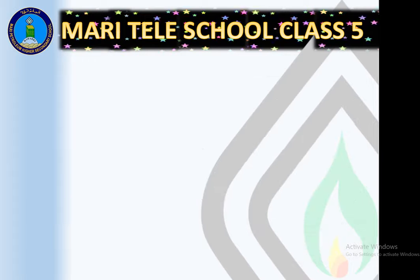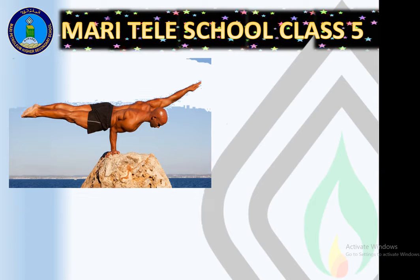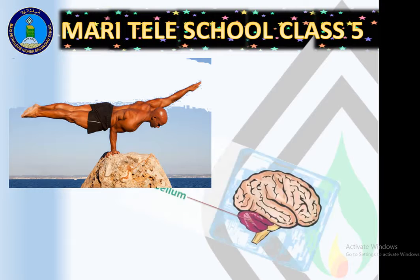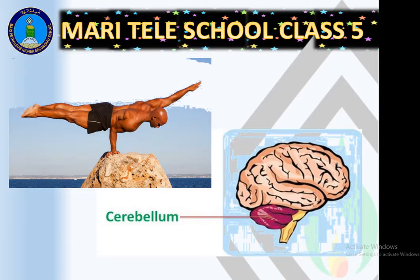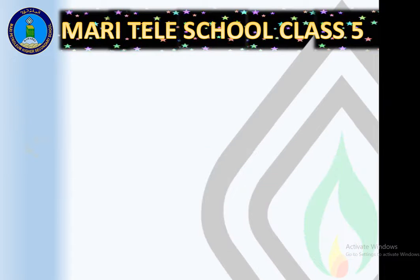Next: a man is keeping his balance on a large stone. Keeping the balance of the body — which part of the brain controls this? The answer is cerebrum, as it controls balance and muscular action.